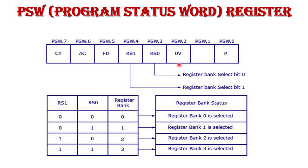The remaining flag bits — PSW4 and PSW3 — are RS1 and RS0. These 2 bits are used for Register Bank Selection. With the help of these 2 bits, we select a particular register bank. In 8051 Microcontroller, we have 4 register banks: Bank 0, Bank 1, Bank 2, and Bank 3. To select a particular register bank, we use these 2 PSW Flag Register bits.